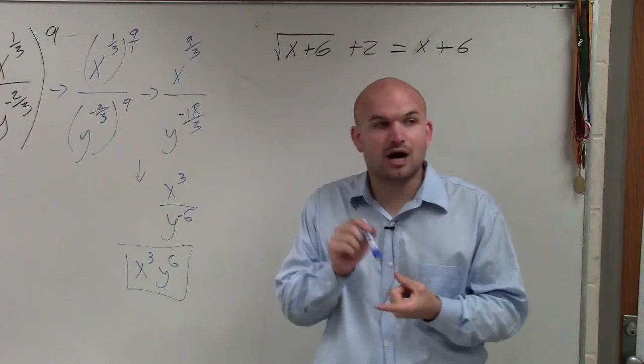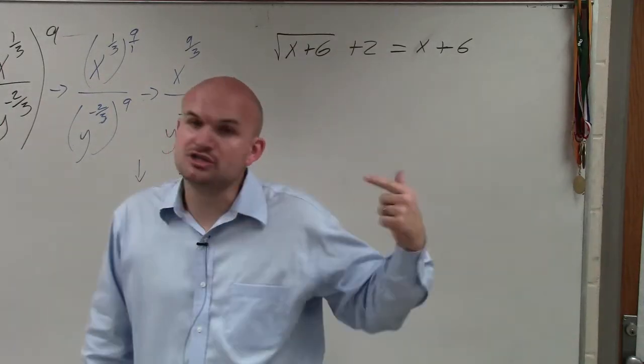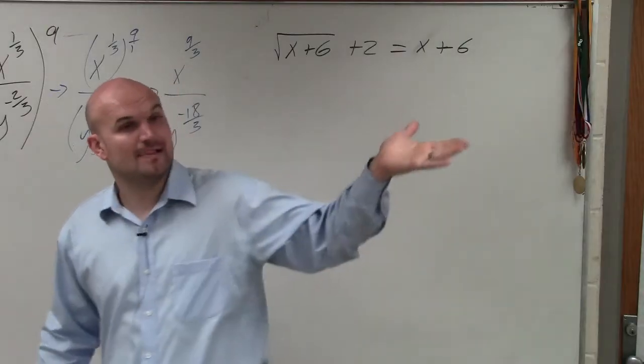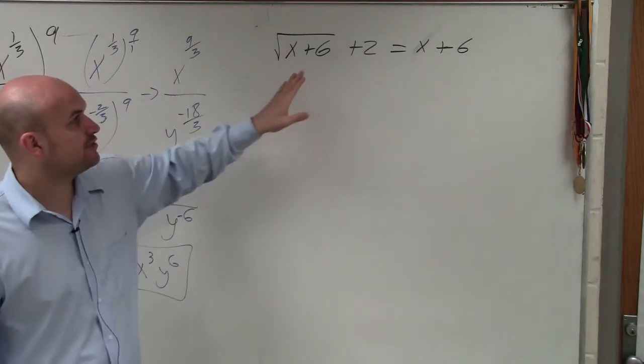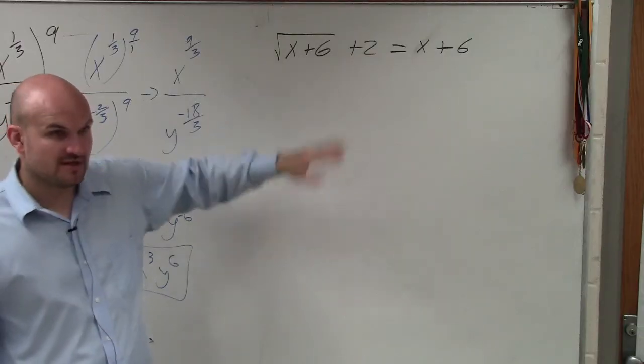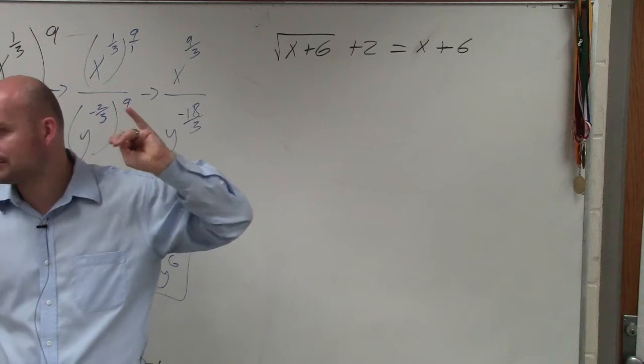The first thing is when we're solving for x, we have to undo the square root, so we're going to have to square. Number two, before we can do that squaring, you've got to make sure we isolate our square root. And the third thing is, once we get into our solving, we have to check our answers.